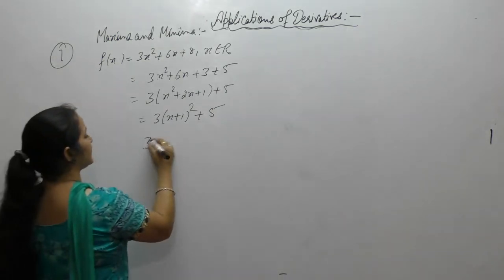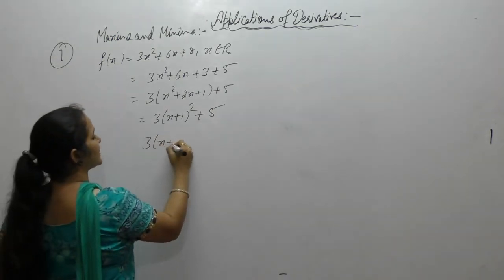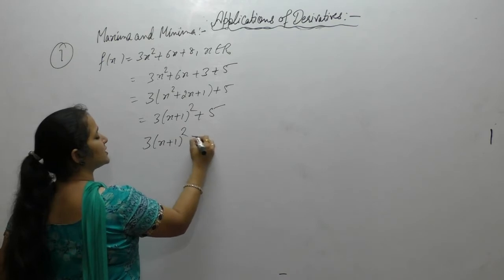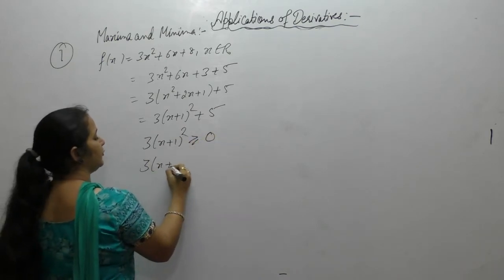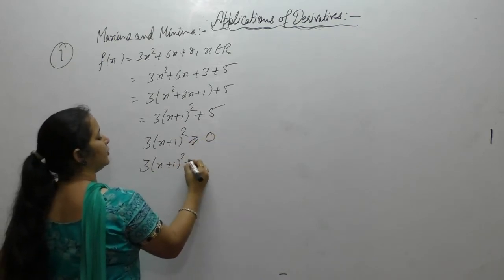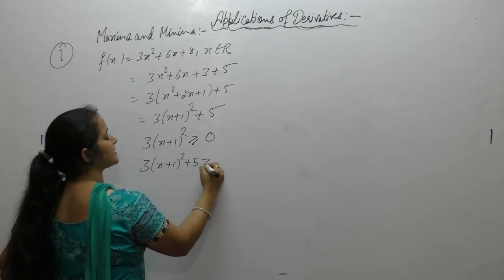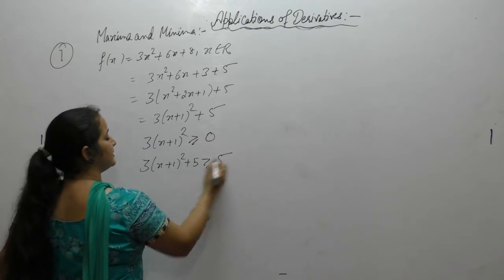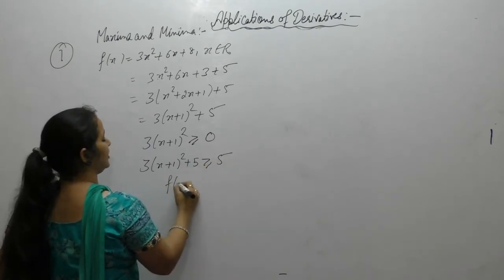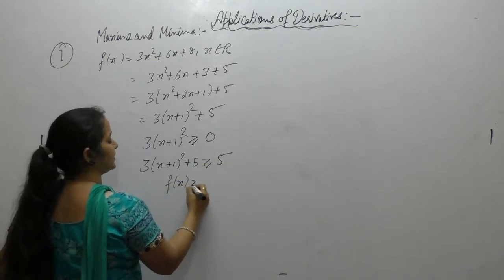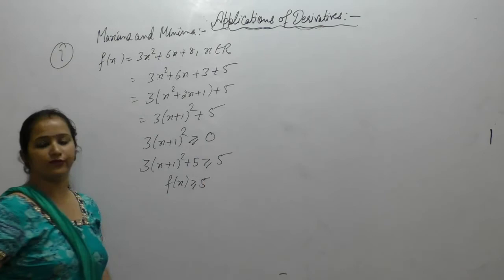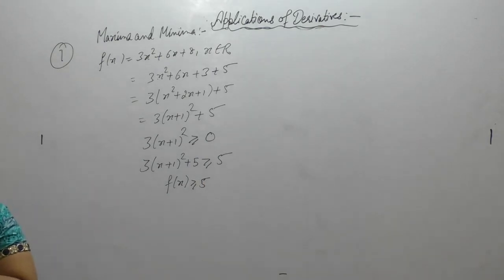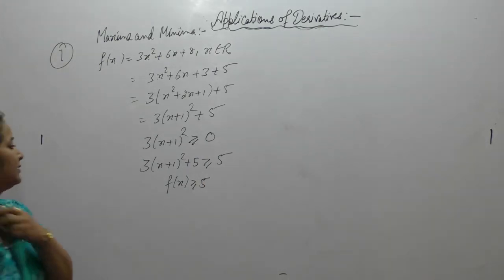Now we know that (x plus 1) whole square is always positive, so 3 into (x plus 1) whole square is greater than or equal to 0. If we add 5 on both sides, then the value of the function is greater than or equal to 5, for all x belonging to real numbers.